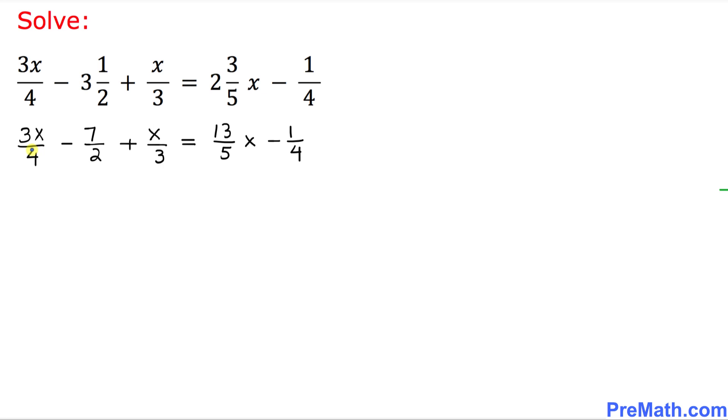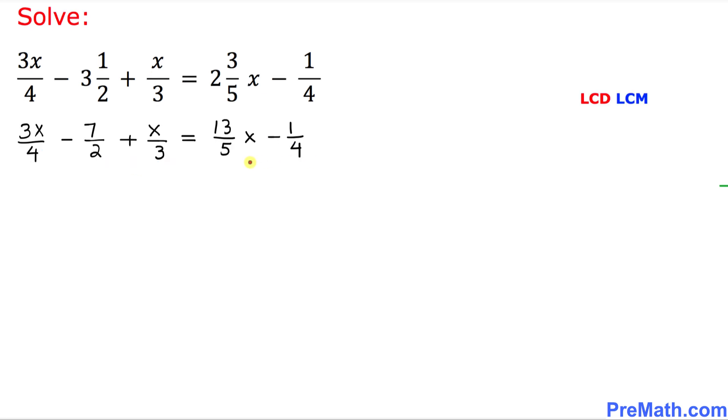So let's focus on the denominators. The denominators are 4, 2, 3, 5, and 4. If we look at these denominators, the least common denominator or LCM for these numbers turns out to be 60.